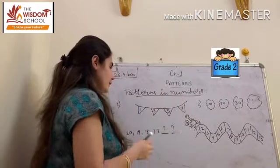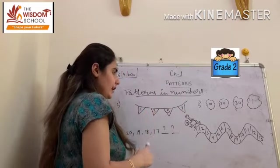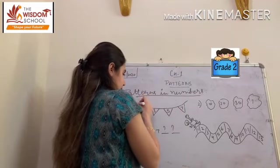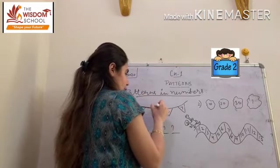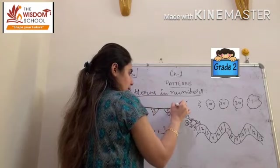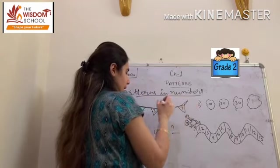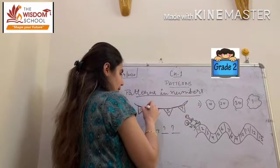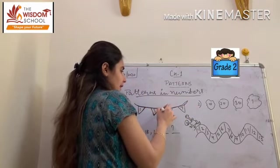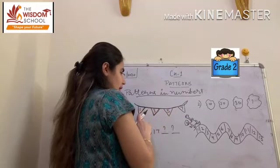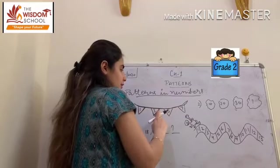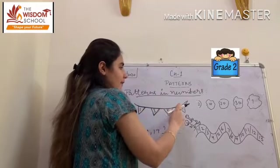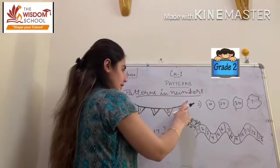So children, the first example is here. There is a row, and children, there are some numbers here: 1, 3, 5, and 7.